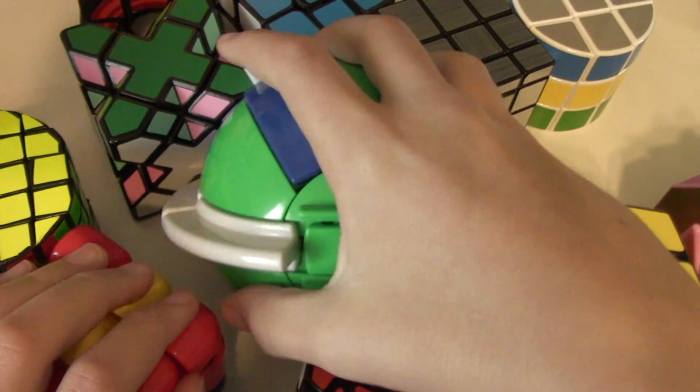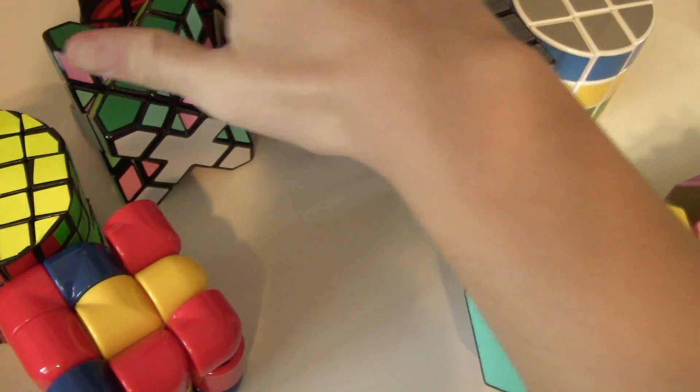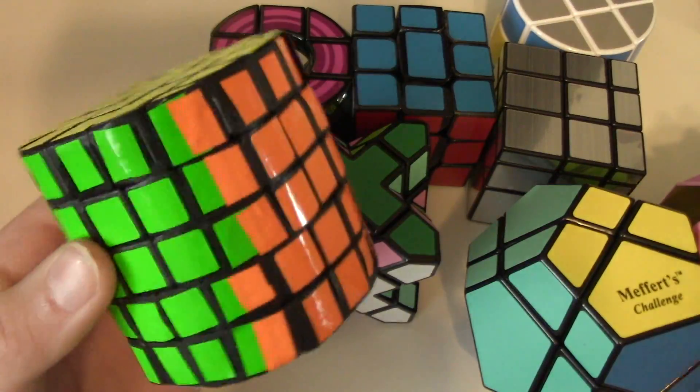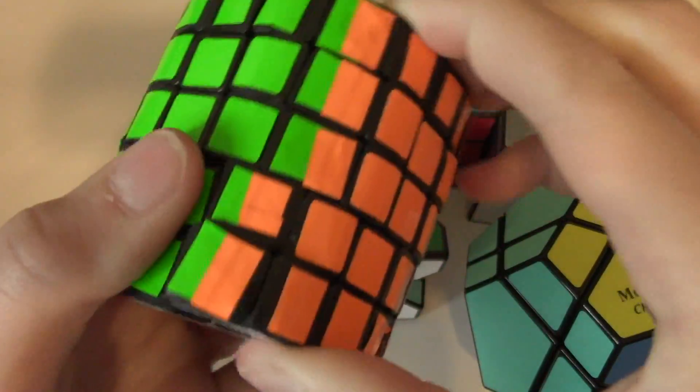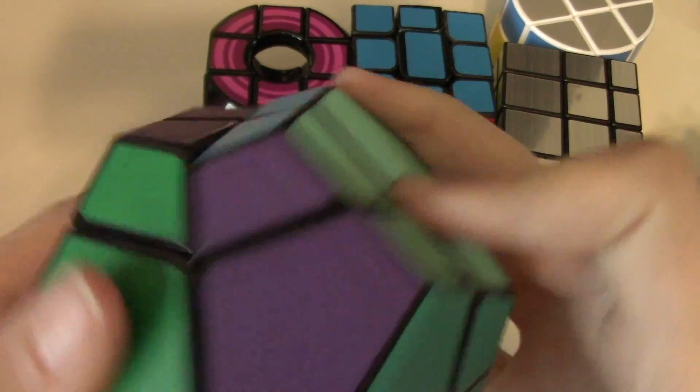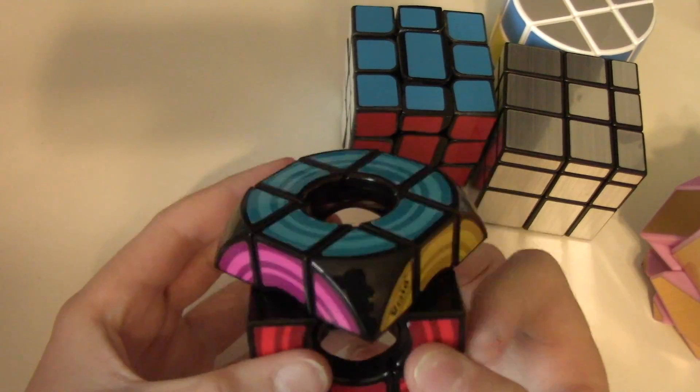Now these are all my shape mods. This is a Gear Ball, the Meffert's Venus pillowed cube, the Cubix 2 which is one of the only cubes in my collection I don't know how to solve. This was my first mod, a 5x5 barrel, but it's really bad as you can see. This is a Skewb Ultimate I think, a Skewb Extreme, and this is The Void by Rubik's.